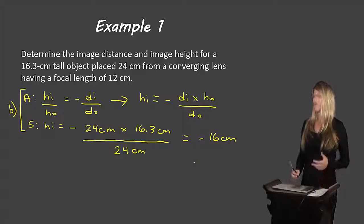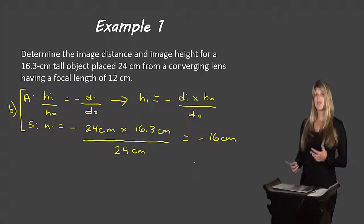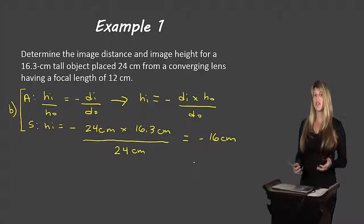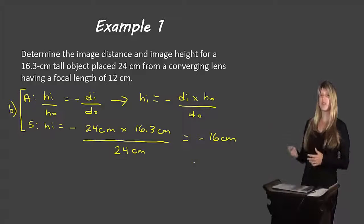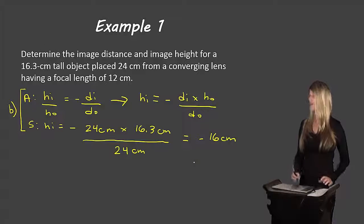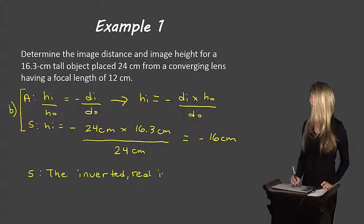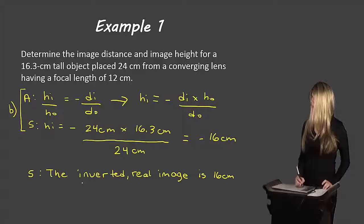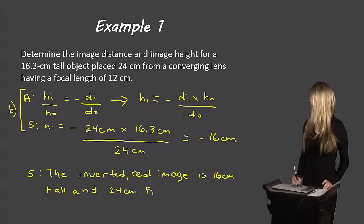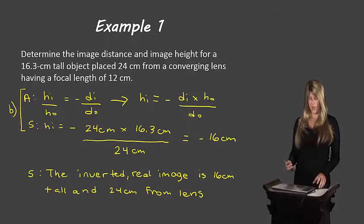Pausing here — does this make sense? Negative 16 for a height means the image is inverted. We know from Part A that we have a real image, and real images from converging lenses are inverted, so they have negative measurements for height. This looks correct. Our concluding sentence: the inverted real image is 16 centimeters tall and 24 centimeters from the lens. That's how we solve a problem like this — let's look at another type of example.